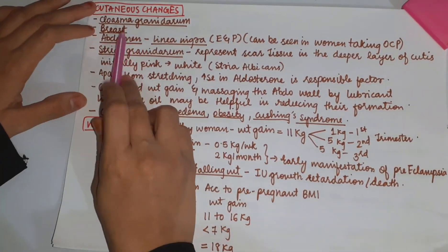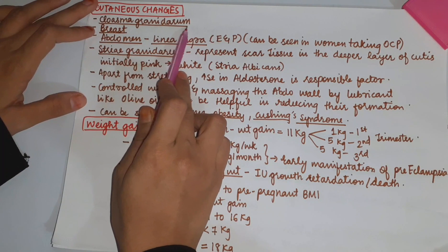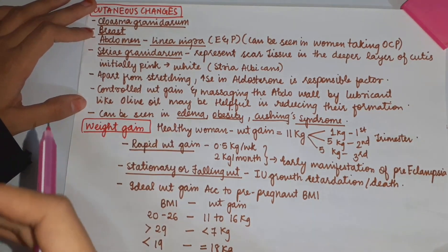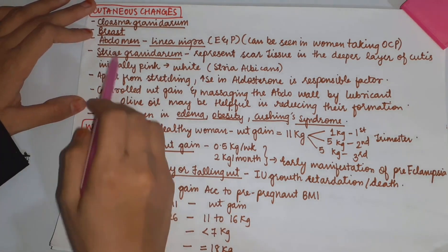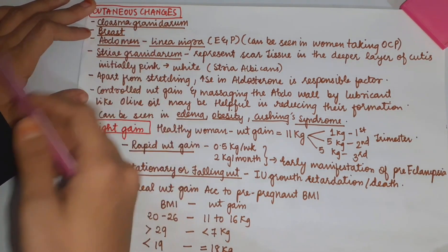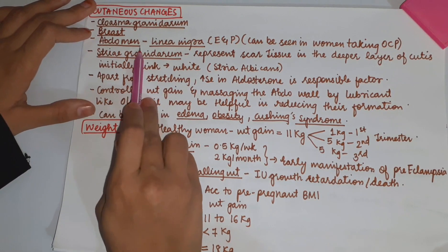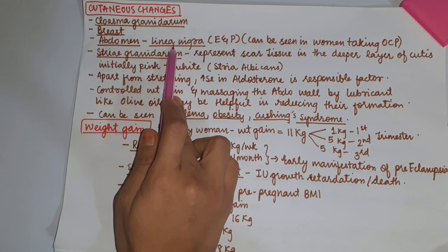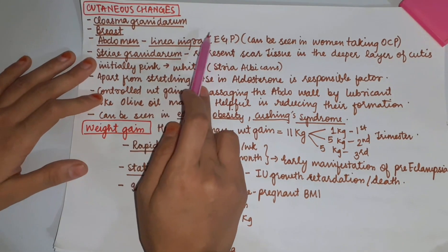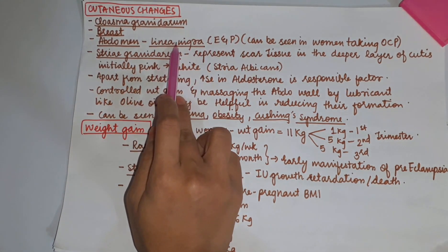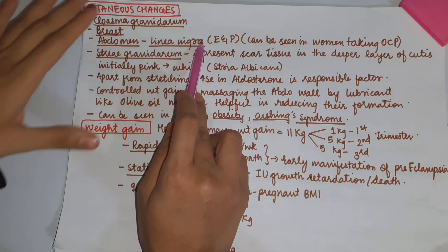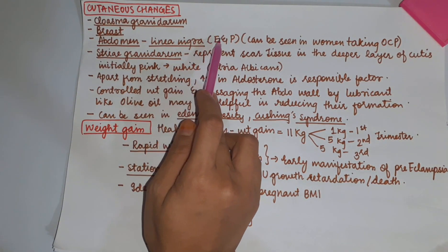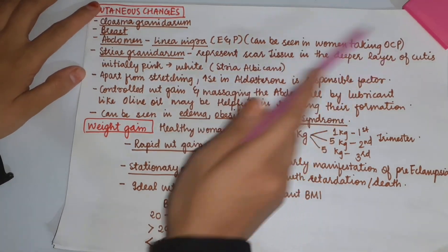Cutaneous changes: there occurs Chloasma gravidarum, in which there is pigmentation around the eyes, forehead, and cheeks. On the abdomen, there occurs Linea nigra, which is a brownish line present from the xiphoid process till the pubic symphysis. This line is produced under the influence of estrogen and progesterone, and it can also be seen in women taking OCPs.